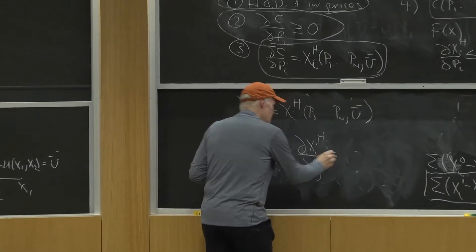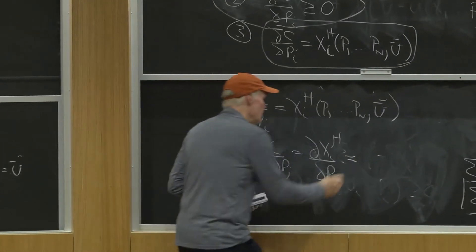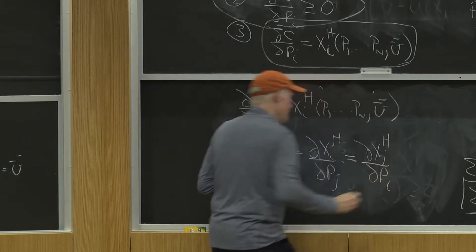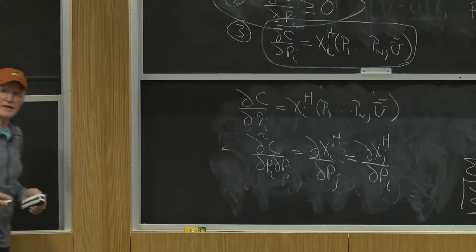But that's also got to be equal to, by the same logic, partial x j h partial pi. This is what's called an economic symmetry.